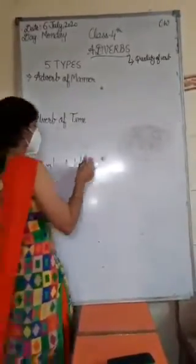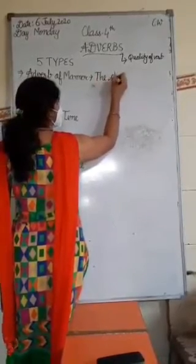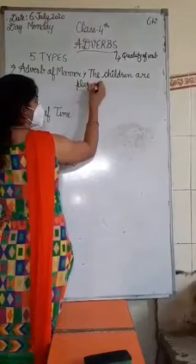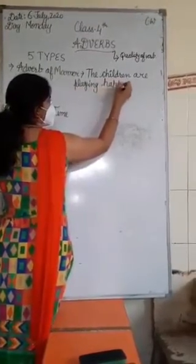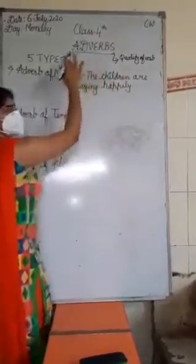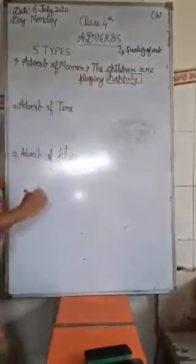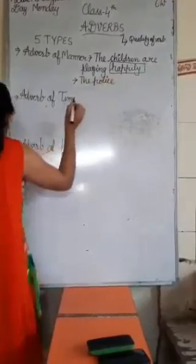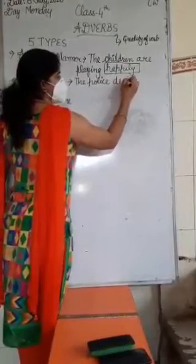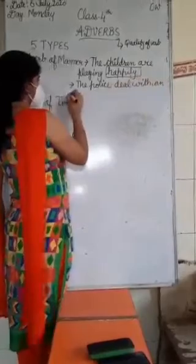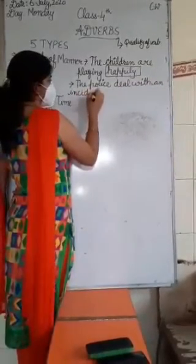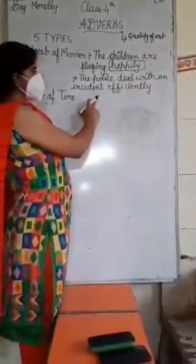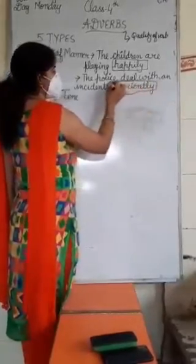Now, at the verb. The children are playing happily. So playing is a verb here and happily is the Adverb of Manner. Now, second example: The police deliver incident efficiently. Efficiently means the police apply full pressure.